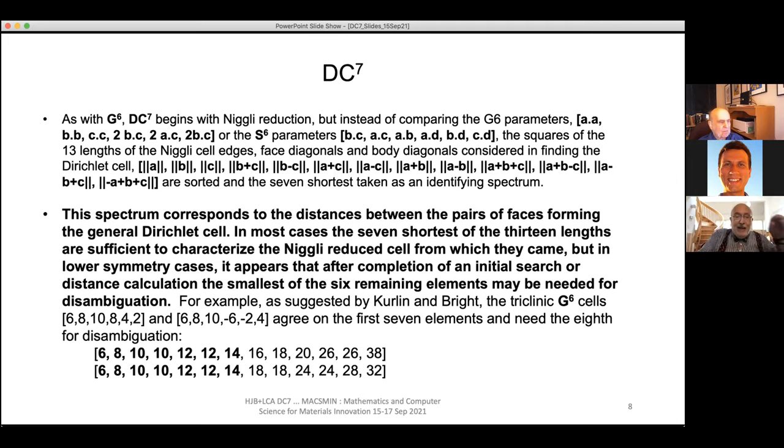The cubics are basically one free parameter. When you get up to the monoclinics, you've got four, and things start to go wrong. Curtin and Bright have this nice example of a triclinic which really starts to go wrong back in the monoclinics. If you look at it as G6 vectors, it's 6, 8, 10, 8, 4, 2 versus 6, 8, 10, -6, -2, -4. This is a very good example of where if you use just the seven elements, you're going to bring together a larger equivalence class than you may want for things which are triclinic or monoclinic. In this particular case, the disambiguation requires you to move to an eighth element.